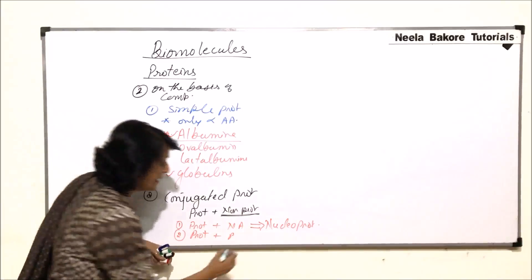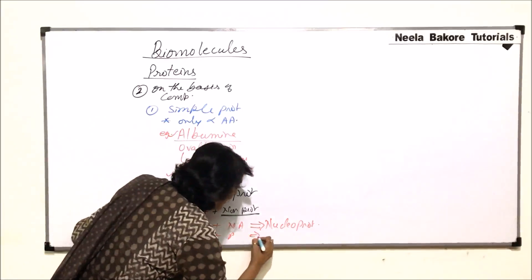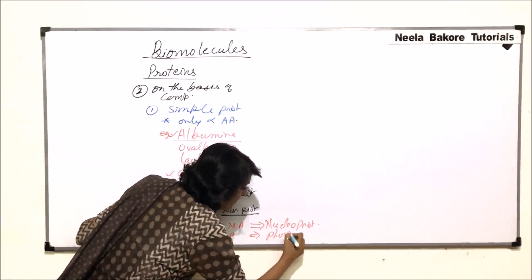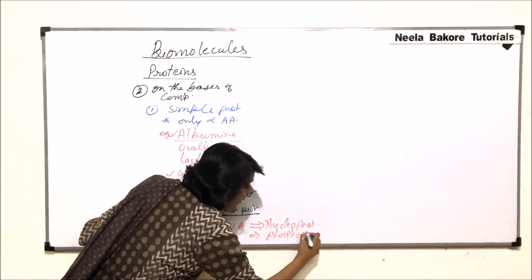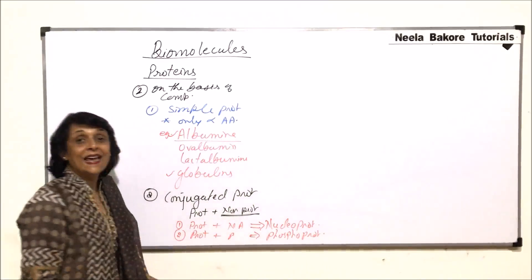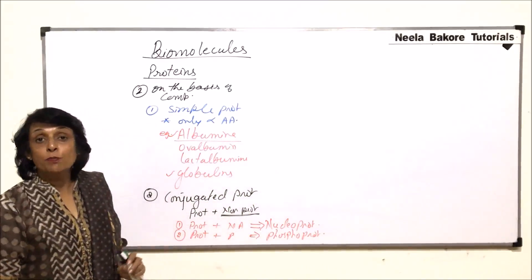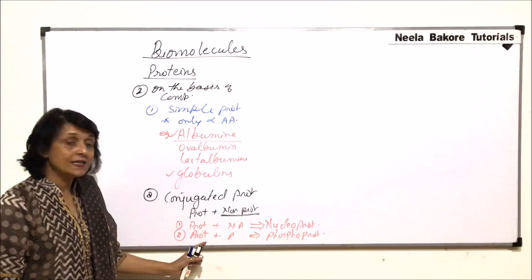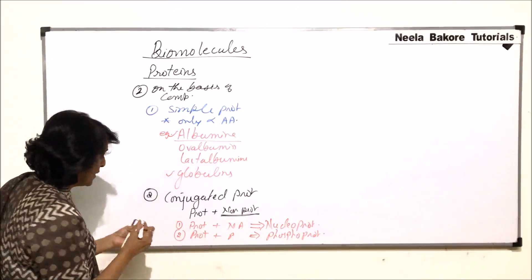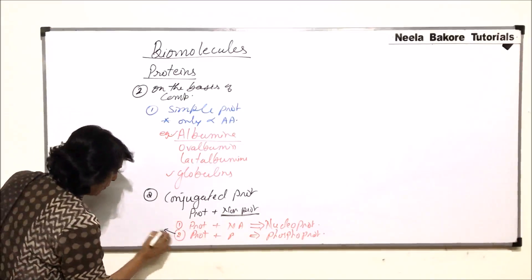Similarly, if a protein has phosphorus or phosphoric acid attached to it, we would call that a phosphoprotein. Casein, the milk protein, is an example of a phosphoprotein.